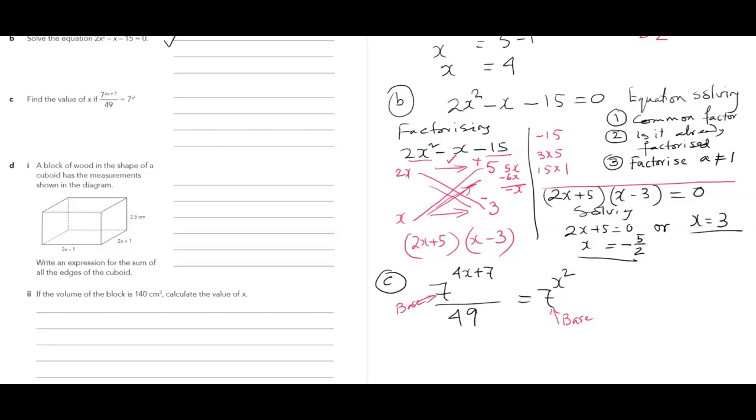So can I write 49 in base 7? 7 times 7. So 7 squared. So what I'm going to do. I will write 7 to the power 4x plus 7. And I'm going to divide that by 7 squared. That should give you 7x squared.